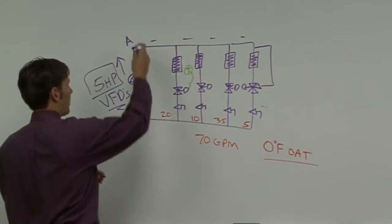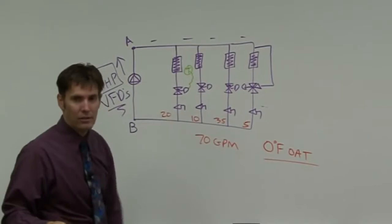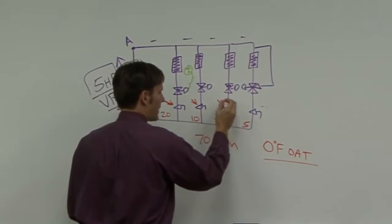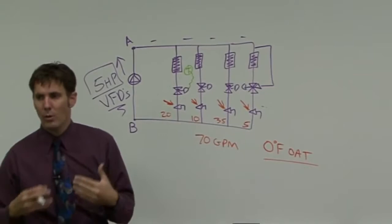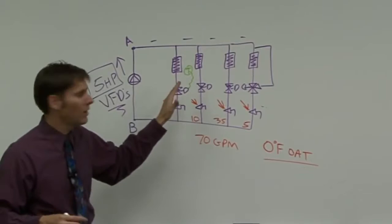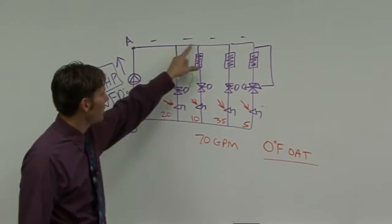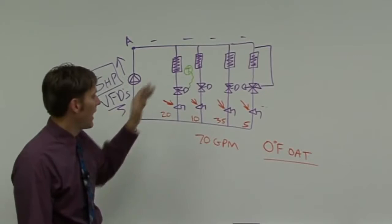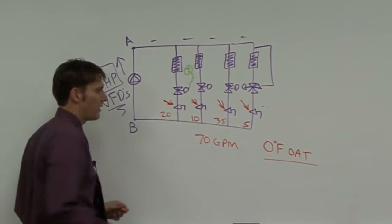How do I know I'll have 20 GPM where I need it? A molecule of water traveling from point A to point B will take the path of least resistance. We have to put in balancing valves and set them so that every path from A to B requires the same effort. In a direct return system, water will flood the nearby circuits and starve the remote ones — that's the nature of the system. We must build in balancing valves to establish equal pressure drops.